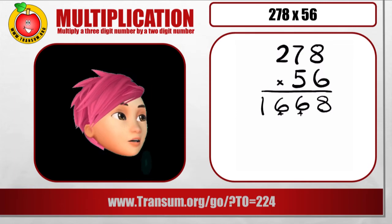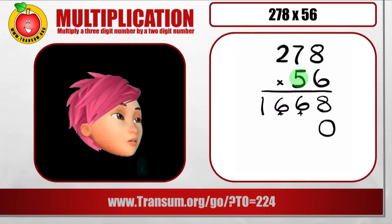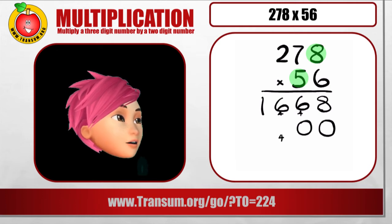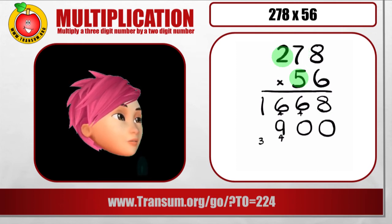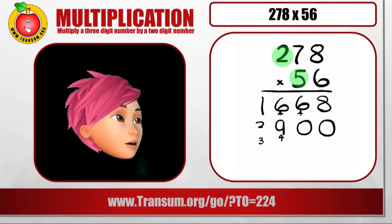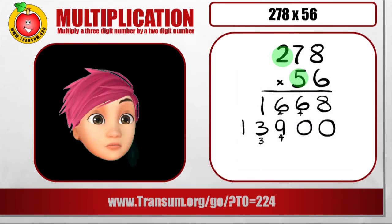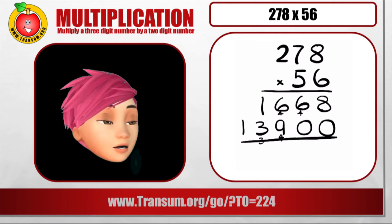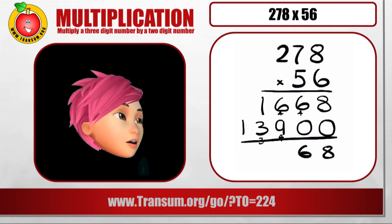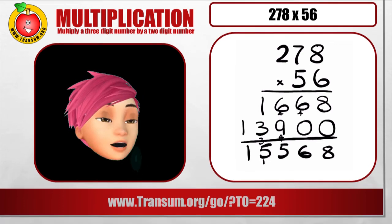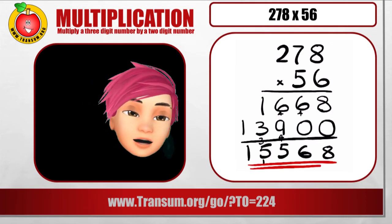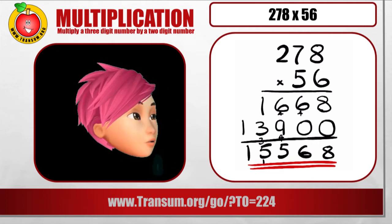Now put a 0 because we're going to multiply by 50 next. And now we can just think about multiplying by 5. So 5 8's are 40. 5 7's are 35. Add on that 4. That makes 39. 5 2's are 10. Add on that 3. We have 13. Do you remember what to do next? We then add up those 2 parts. So from the right. 8 6 5 carrying 1. 4 5 1. So the big answer is 15,568. Who'd have guessed?